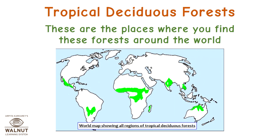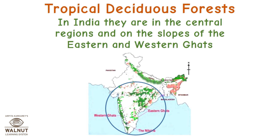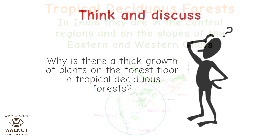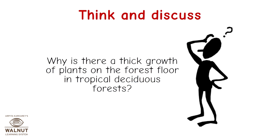These are the places where you find these forests around the world. In India, they are in the central regions and on the slopes of the eastern and western ghats. Think and discuss: why is there a thick growth of plants on the forest floor in tropical deciduous forests?